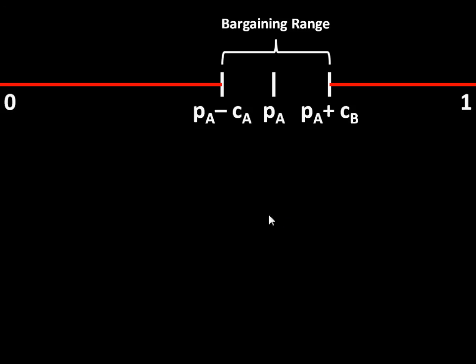Note that when the states fight, we still have inefficiency, because the first strike advantages are negated. Both sides fight just as under normal circumstances — A wins with probability PA but pays cost CA, and B pays cost CB. There is deadweight loss: both sides pay costs that go to neither side. This is bad for the system, because bargains that are mutually preferable to war do exist — it's just that we can't credibly commit to them. As soon as one side decides to sit down at the bargaining table, the other has incentive to launch a first strike and take advantage of that fact.